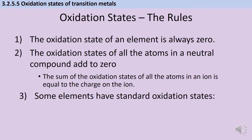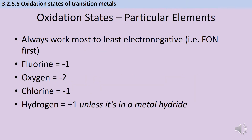The first rule is that where you have an element, the oxidation state is always zero, although that's not particularly relevant when we're talking about transition metals. The second is that where you've got a neutral compound, the oxidation states are going to add up to zero. And if you've got a compound ion — so a few atoms bonded together with a charge over the whole ion — then the sum of the oxidation states will be the same as the charge on the ion. Finally, there are some elements that have standard oxidation states, and you always work from the most electronegative element to the least electronegative element.